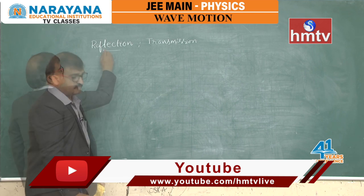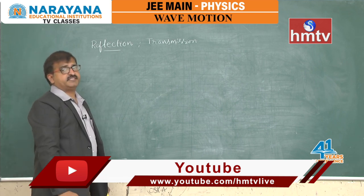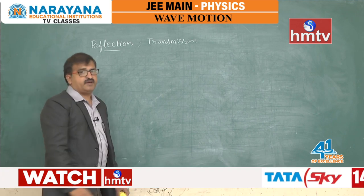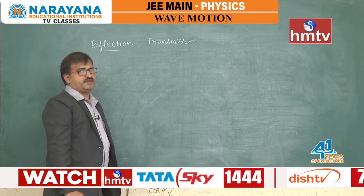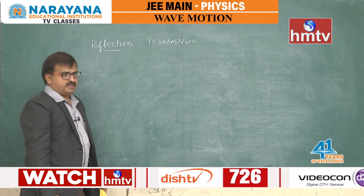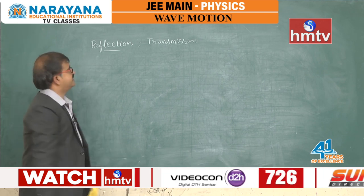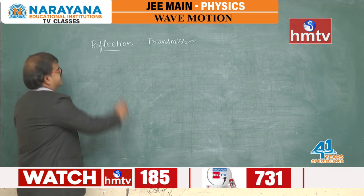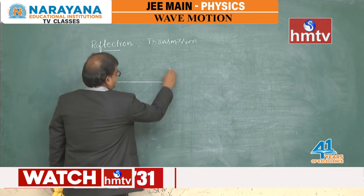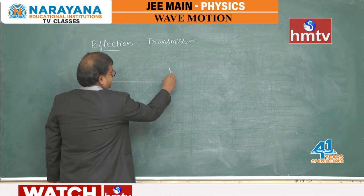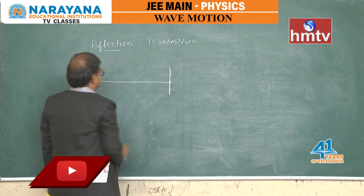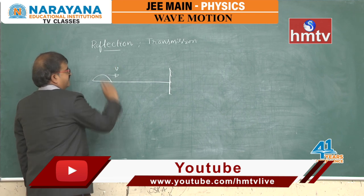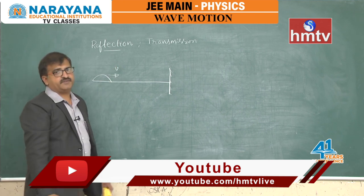Reflection at one end which may be fixed or free, and transmission from one medium to another medium — what changes occur during transmission. In the reflection case, if one end is fixed, a pulse has been created and it is travelling in the string with wave velocity.